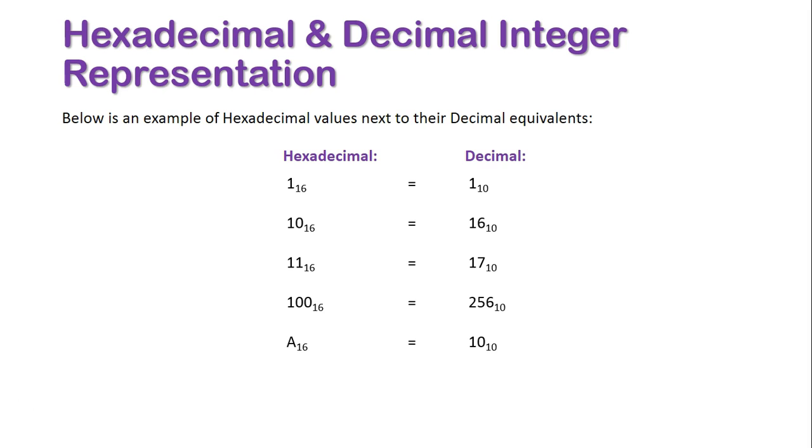A is equal to 10 in decimal, because that's when it starts becoming double digits. ABC basically means we have 10 times 256, we have 11 times 16, and 1 times 12.